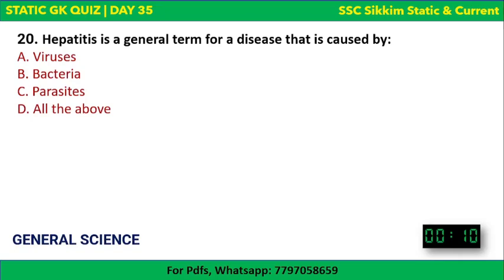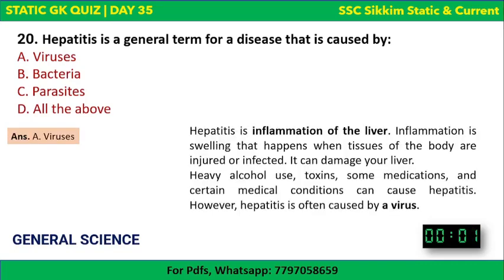Last question: hepatitis is a general term for a disease caused by what? Options: viruses, bacteria, parasites, or all of the above. The correct answer is viruses. Hepatitis means inflammation of the liver — swelling that occurs when liver tissues are injured or infected — and is primarily caused by viruses, though alcohol, toxins, and medications can also cause it.